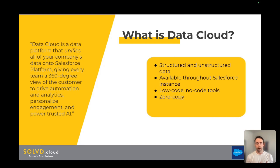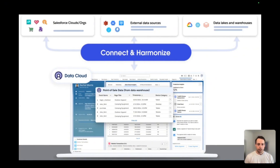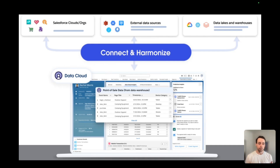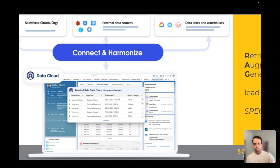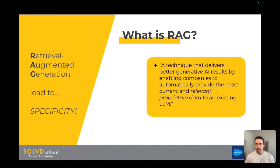It uses zero-copy retention, which means your data is not actually moved into Data Cloud, but it is available there to be used. Here's a graphic from Salesforce — you can see that you can get data from different Salesforce clouds such as Sales Cloud, Service Cloud, and Marketing Cloud, or other external data sources like Amazon S3 buckets, Snowflake, and other data lakes and warehouses. You can bring it all into Data Cloud and then report on that data, run automations off of it, and use it to enhance and integrate with Agentforce.